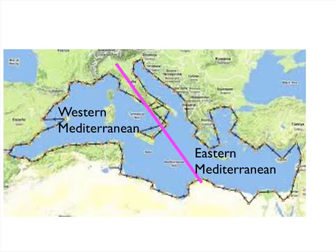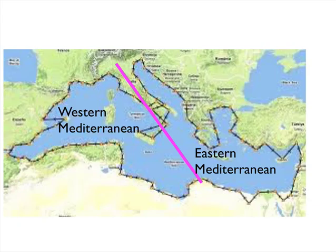Geographers have divided the Mediterranean into the western Mediterranean and the eastern Mediterranean, and they have used Italy to do it. Everything from the east coast of Italy over to Turkey and the Levant, which is Lebanon and Israel today, is the eastern Mediterranean. Everything from the western coast of Italy out to the Atlantic is the western Mediterranean. The Aegean is in the eastern Mediterranean.